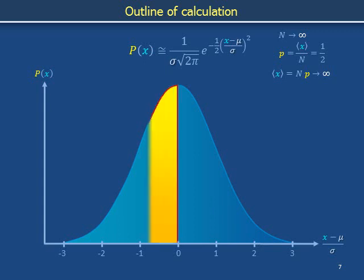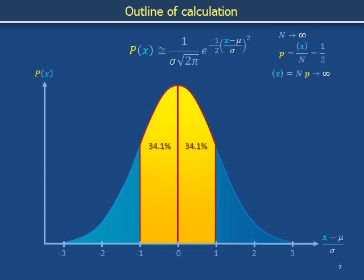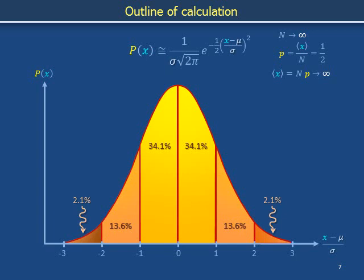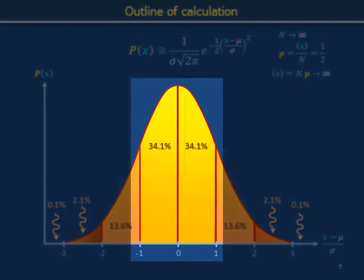The region extending from one standard deviation below the average to the average, and the region extending from the average to one standard deviation above the average, each contain 34% of the total area under the curve. The next slabs each contain about 14% of the probability, the following slabs each about 2%, and the remaining regions each a tenth of a percent. The horizontal axis is the deviation of x from its average value, measured in units of sigma — the square root of the variance, also known as the standard deviation. Roughly two-thirds of the area under the curve is found between minus 1 and 1, i.e., within the first standard deviation.